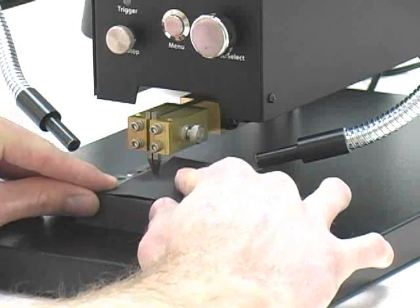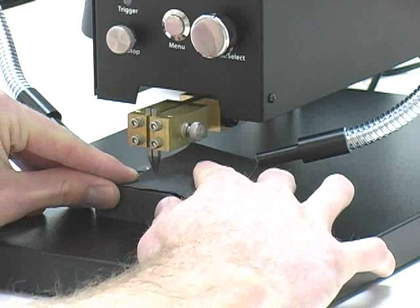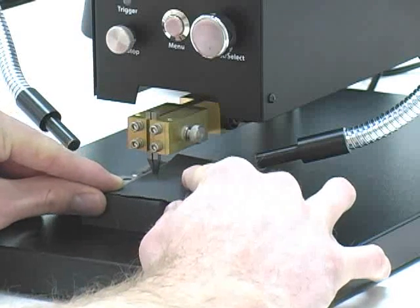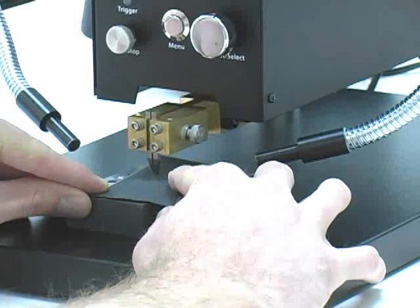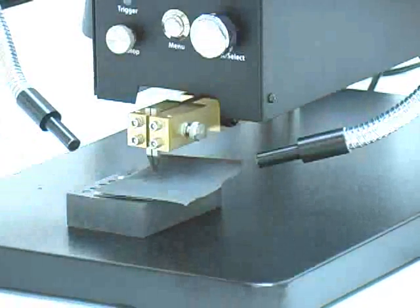Electrodes should be maintained to be free of burrs and rough edges. It is also important that both electrode chips make full contact with the workpiece. This can easily be accomplished by sanding the electrodes in the same plane that you will be welding on.